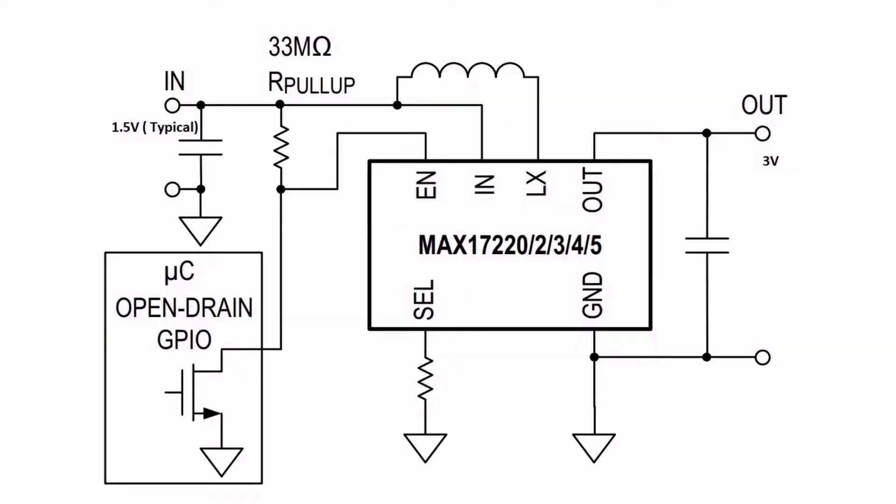However, configuring the part as shown will have a quiescent current of 813.1 nano amperes. Hence, to extend the battery life of the circuit, it is advisable to use a push-button configuration.